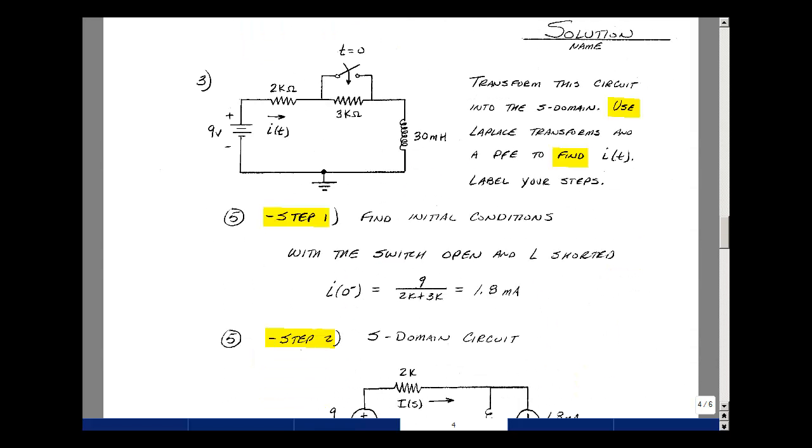Problem number three is an RL switching circuit. We're asked to transform into the S domain, use the Laplace transforms in the partial fraction expansion to find I(t). Let's label all our steps. In our notes, we had a five-step algorithm. Step one is to find the initial conditions. So for T less than 0, we have the switch open. The inductor looks like a short circuit in steady state. We have 9 volts across 5k. That's 1.8 milliamps.